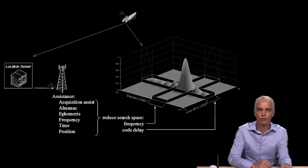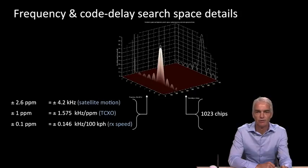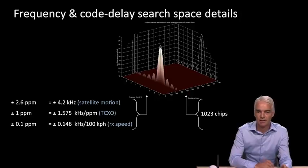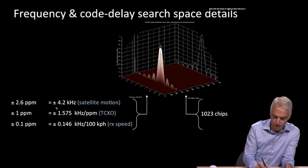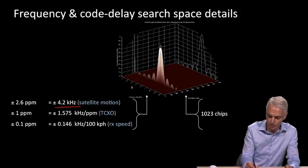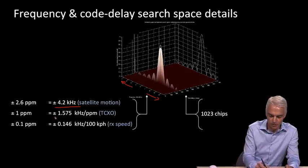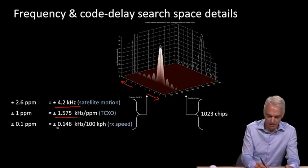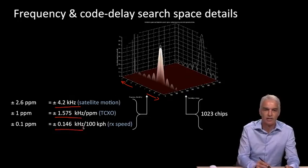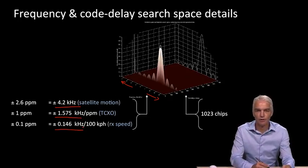You'll recall we saw with Assisted GPS we can reduce the search space. And from Module 4 we looked at the search space and worked out how big it was in terms of the contributors. Satellite motion gave us plus or minus 4.2 kilohertz on the frequency axis. The effect of the TCXO was 1 for 1 in terms of PPM and 1.575 kilohertz per PPM. And receiver speed was by far smaller, 0.146 kilohertz for each 100 kilometer per hour of receiver speed.